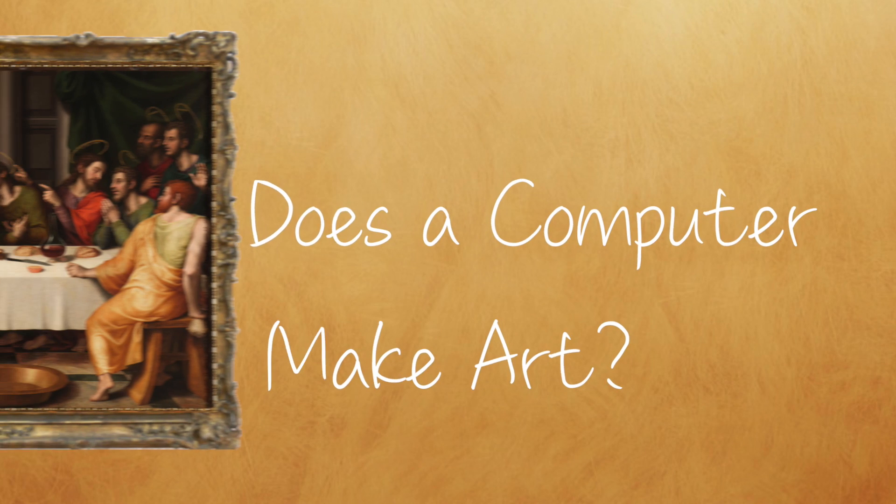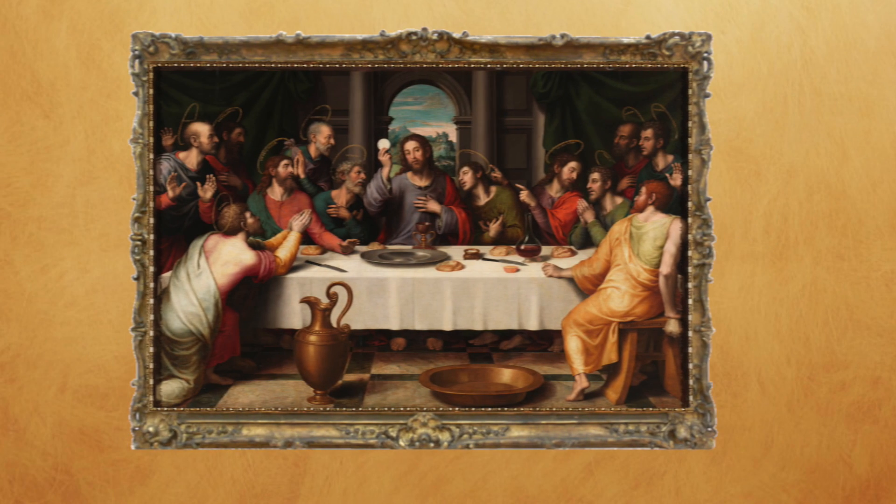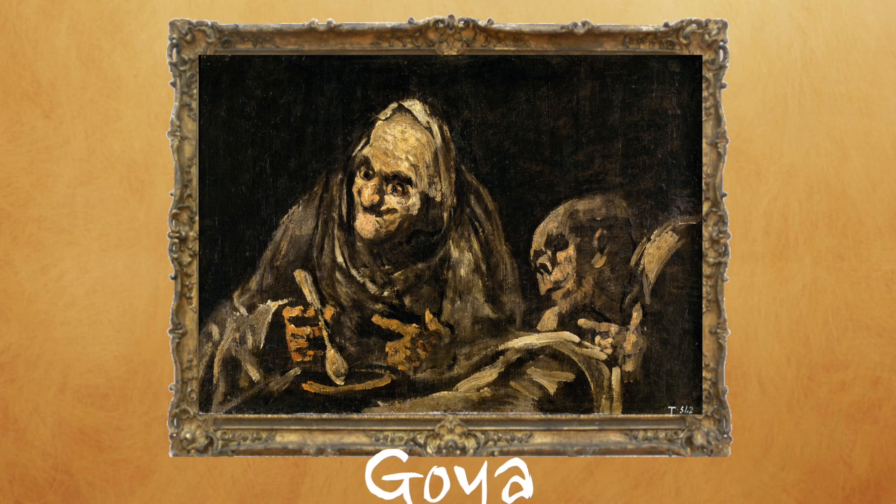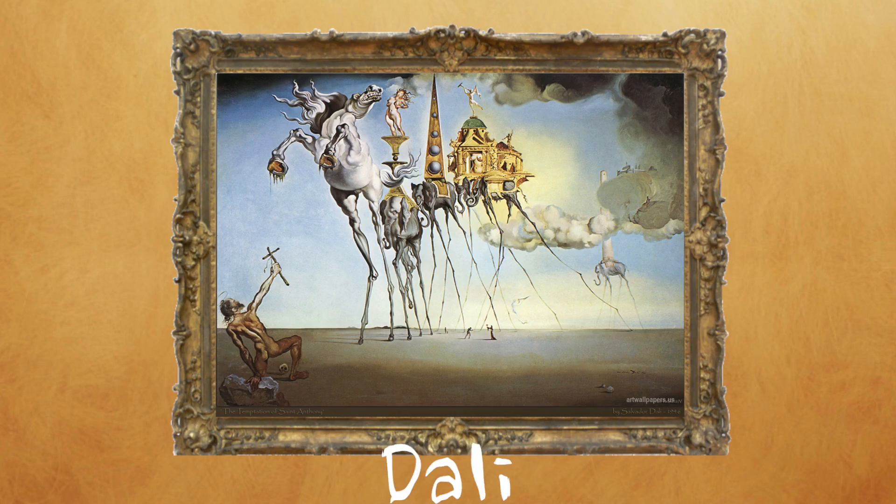How does a computer make art? The great artists of our time have all had their own distinct style. Da Vinci could evoke wonder and layer hidden messages in his works. Goya was able to create an unmatched sense of dread. Dali blurred the line between reality and dreams.